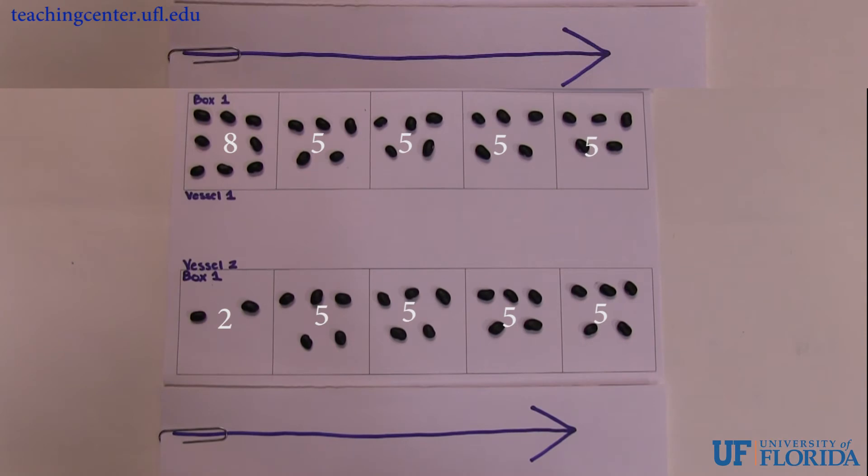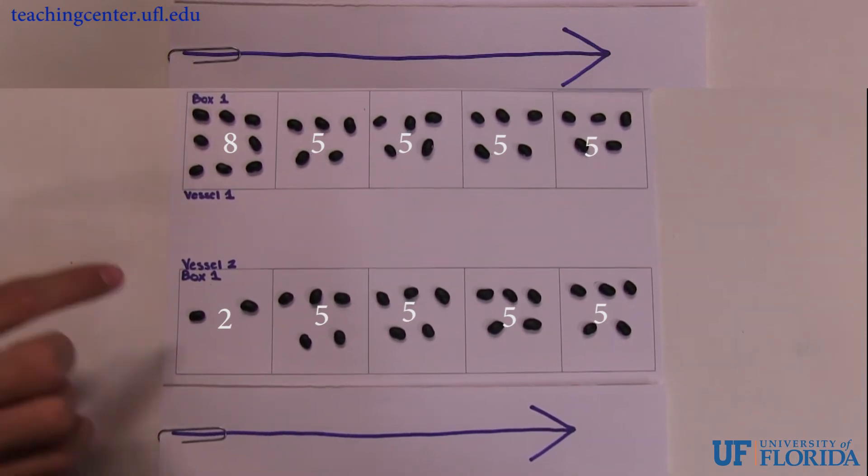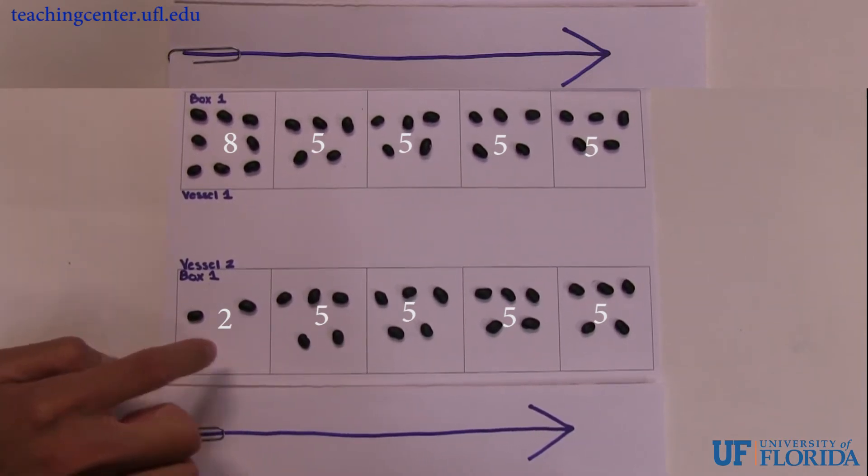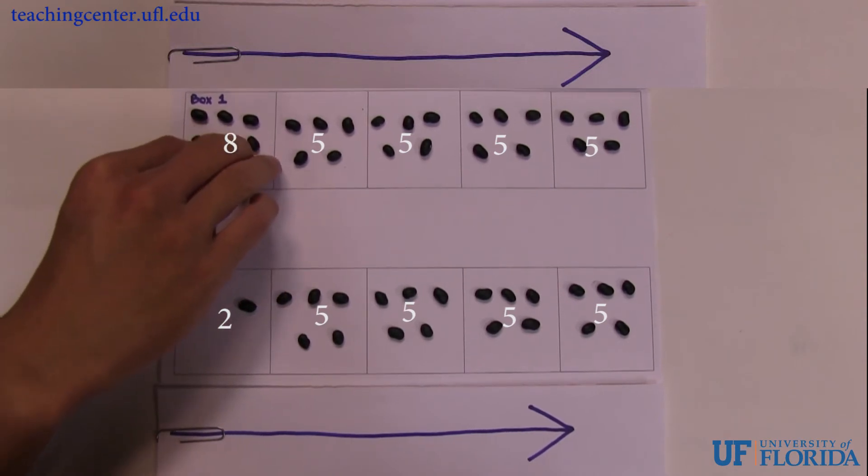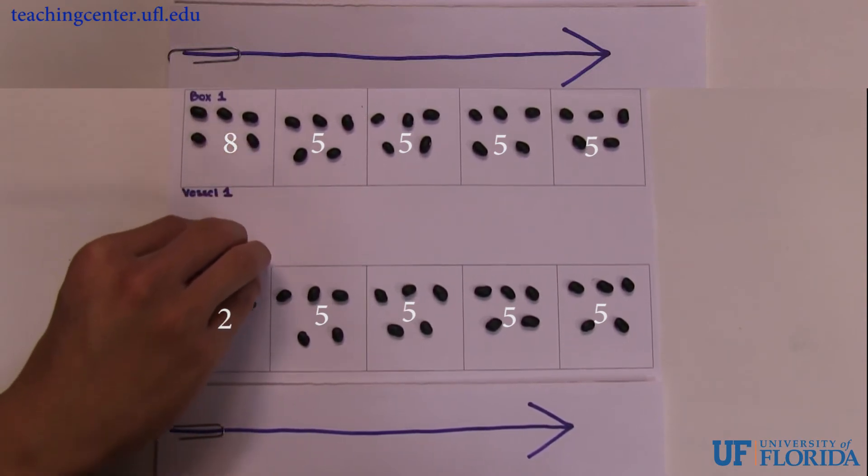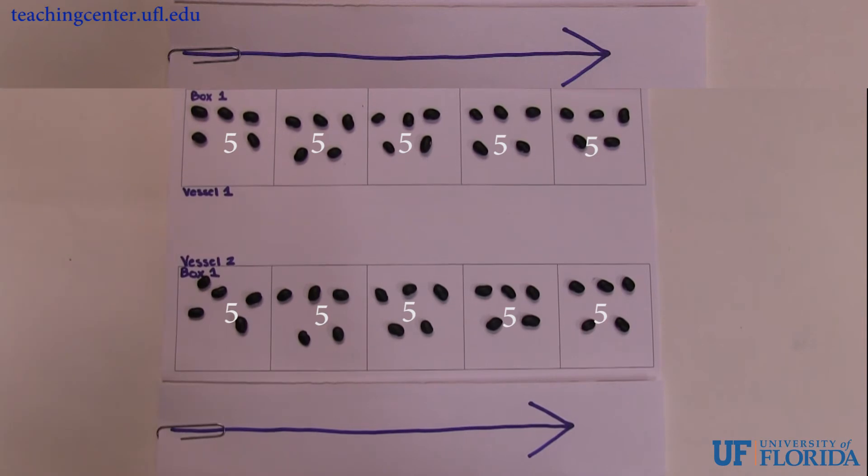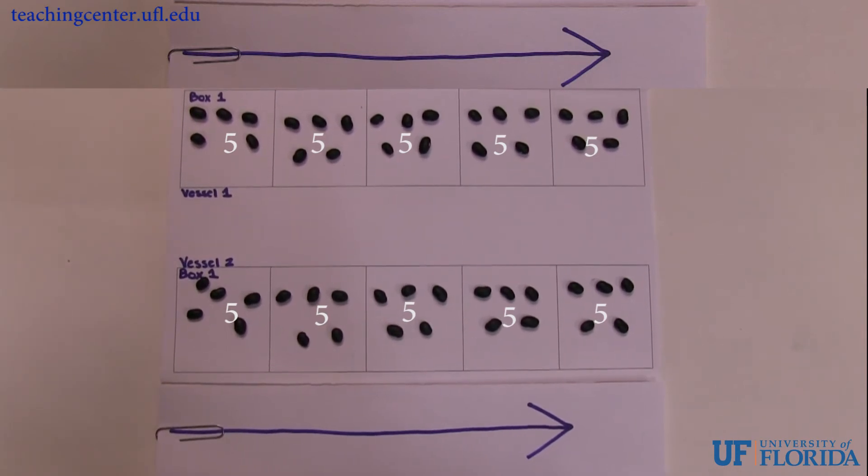As a result, bean exchange can only occur in the first box, so 3 beans will transfer from vessel 1 to vessel 2, leaving each vessel with 5 beans in box 1.